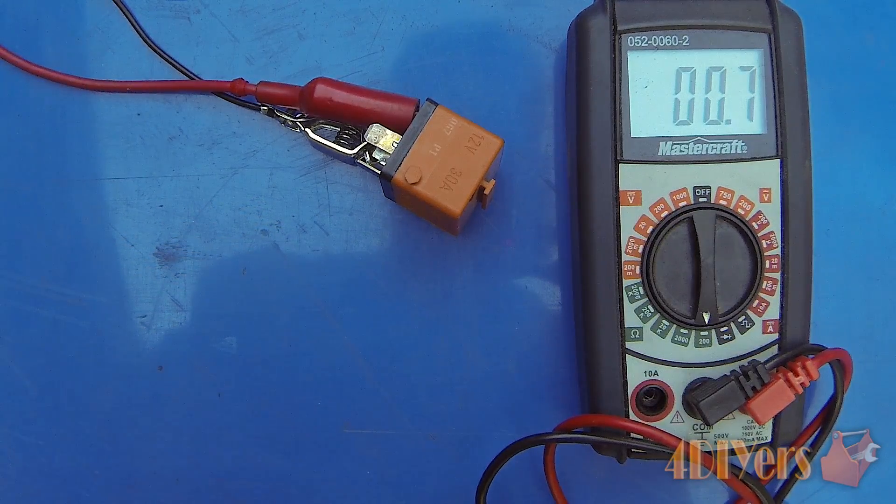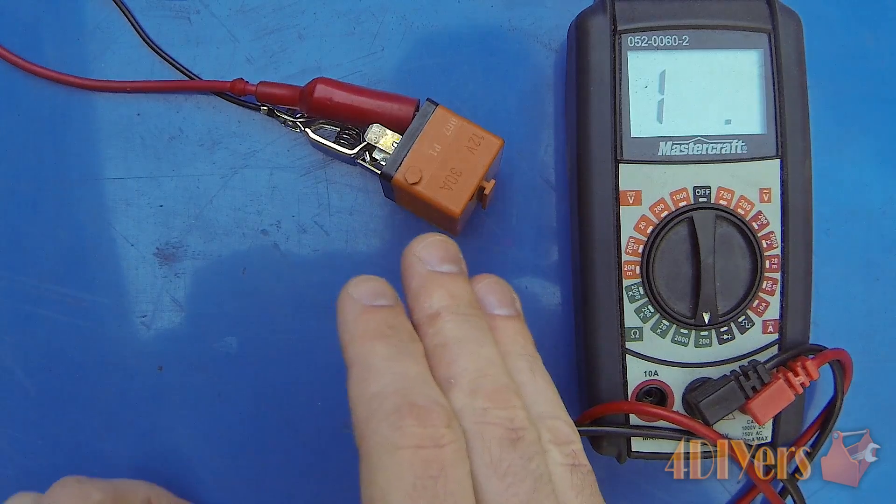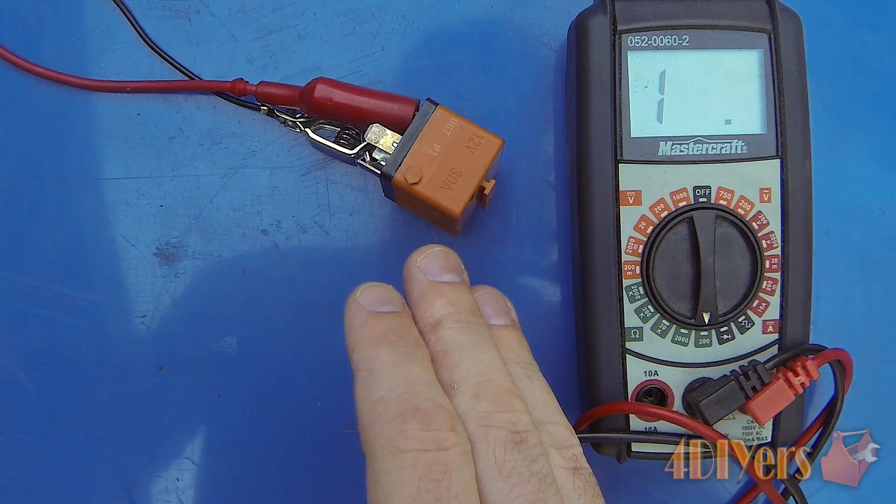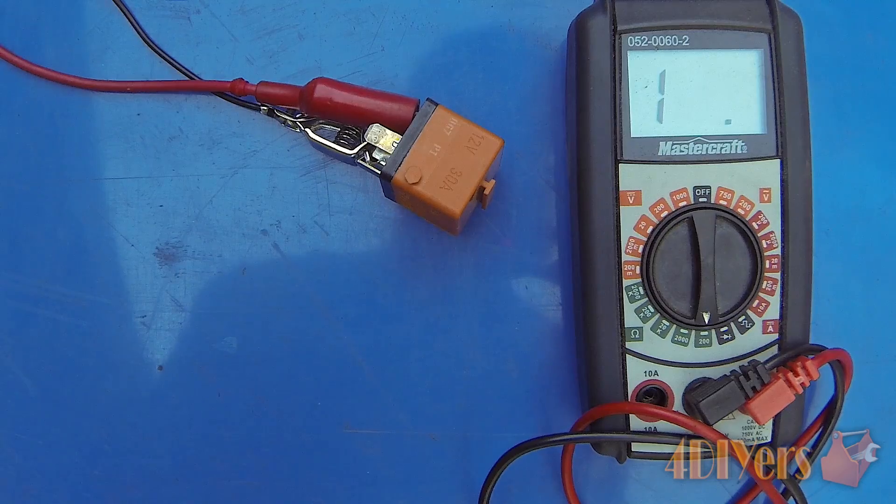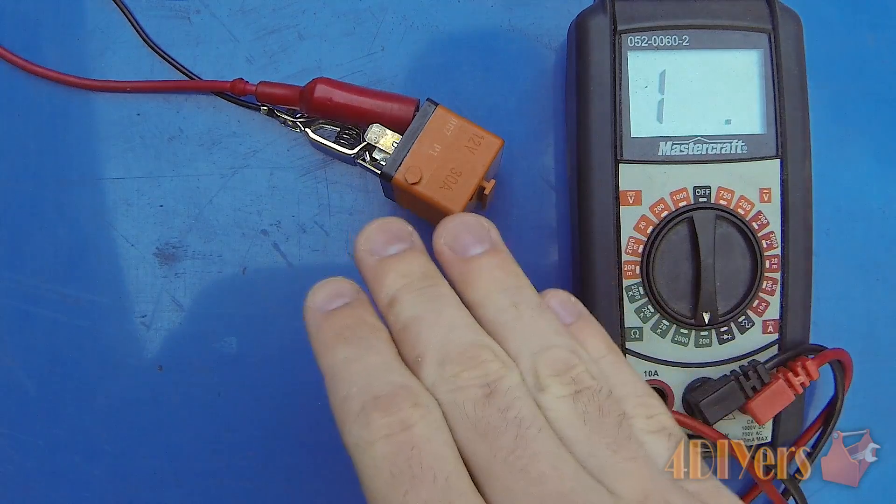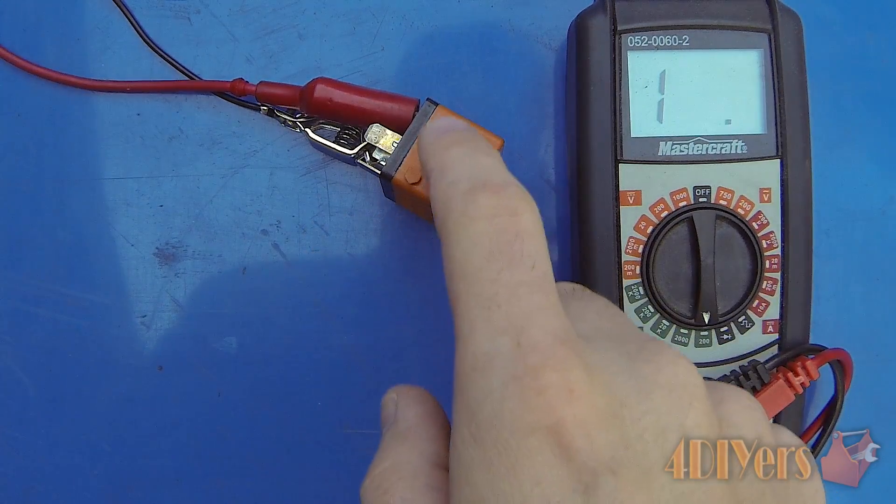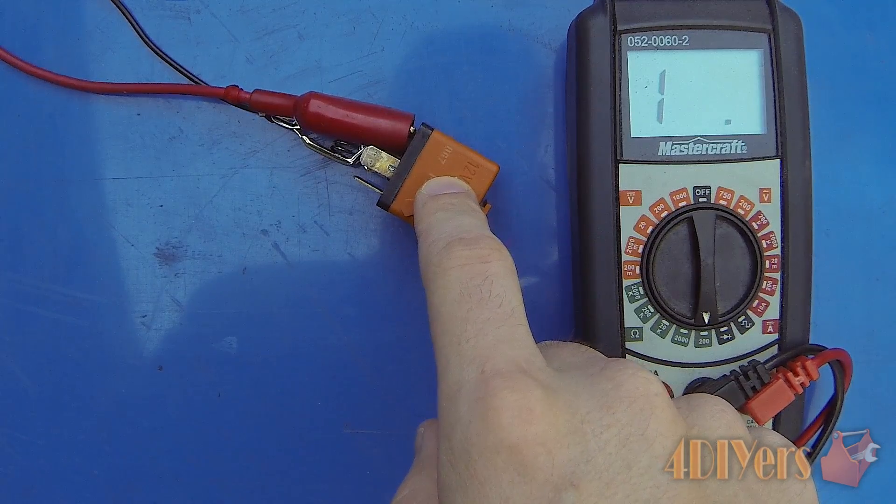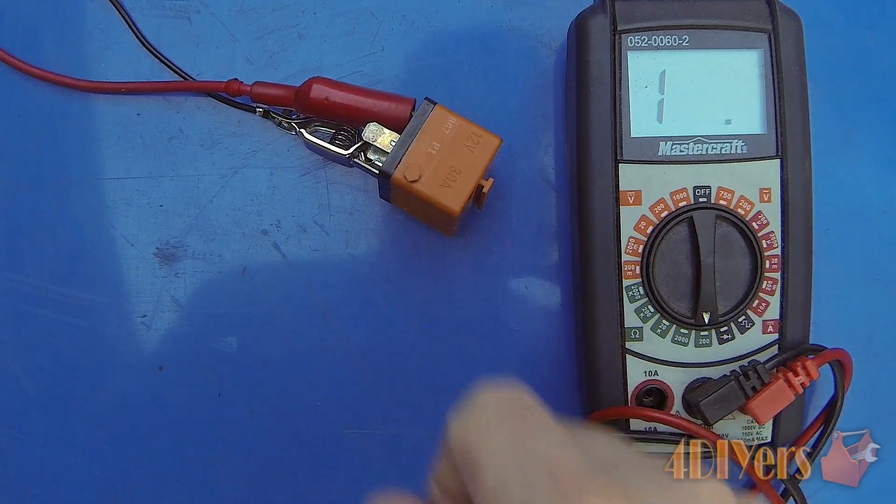If you're finding higher resistance, possibly the contacts have arced a bit and don't have proper contact inside. If you still don't have a reading, the relay is faulty. With a normally closed relay, this will be the opposite process.